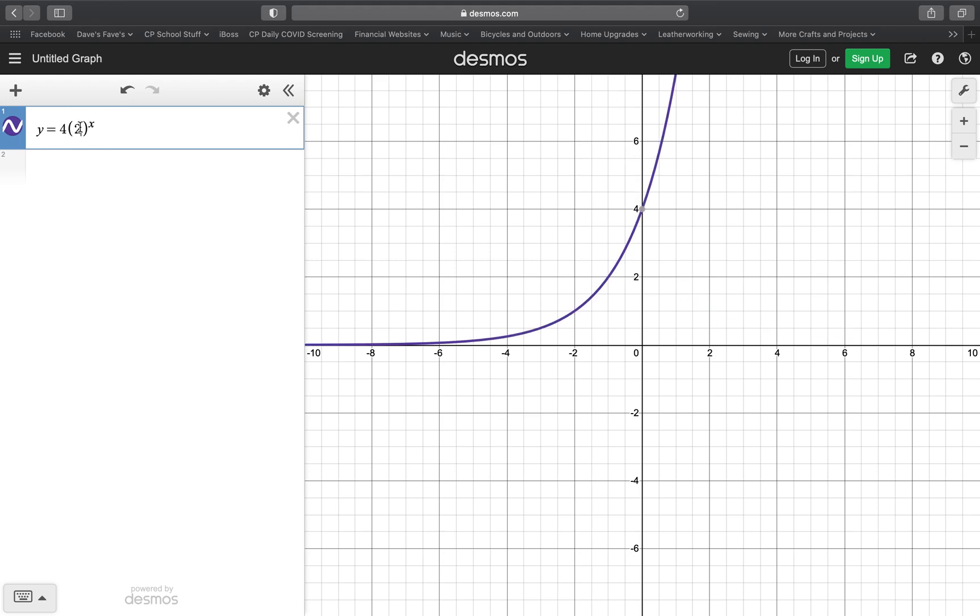Now, let's look and see what happens if we change from growth to decay. So now we have an exponential decay, where it's large on the left and it gets smaller as you move to the right. And you'll see that the a value still gives the y-intercept of 4.